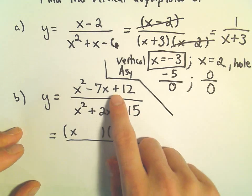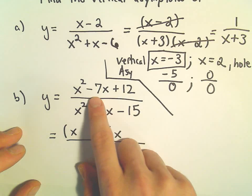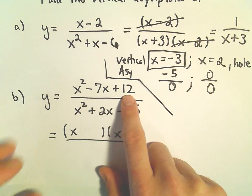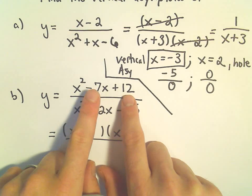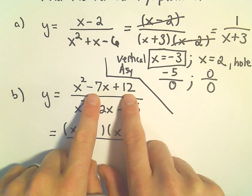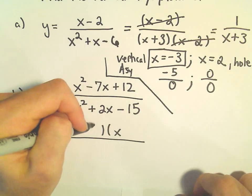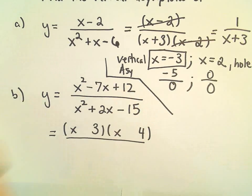So let's see, two numbers that multiply to positive 12 but add up to negative 7. Let's see, I don't think 1 and 12 work. Some combination of 2 and 6, I don't think so. Oh, I think 3 and 4 would be the numbers that we could use.